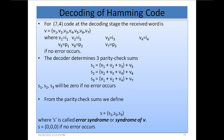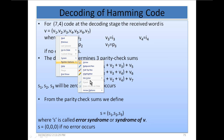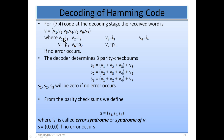That is the 7,4 Hamming code. For 7,4 code, at the decoding stage, the received word V is equal to V1, V2, V3, V4, V5, V6, V7. It is simply that we have changed the letter V from C. At the transmitting side we call it C; at the receiving side we call it V.